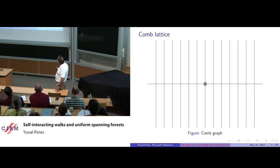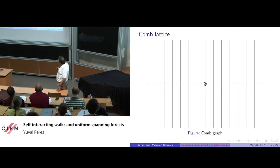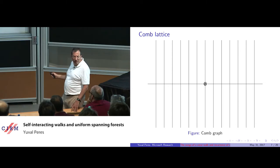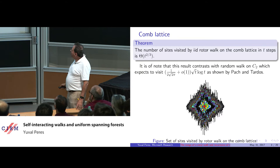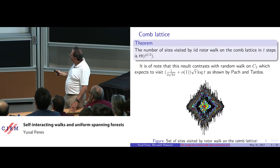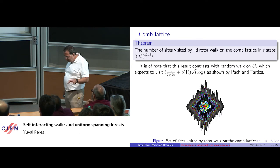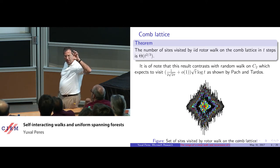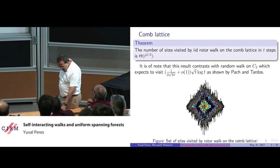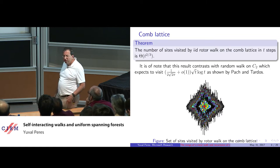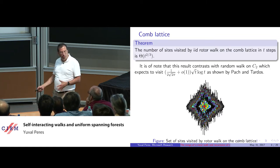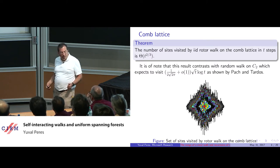One example we can analyze is the comb graph — one of my favorite graphs. This is a subgraph of Z² with one horizontal line and all the vertical lines. This is how the structure of the visited set looks in this graph. In Z² the conjecture by Priezzhev et al. is that the range of the rotor grows much slower than for random walks — t^{2/3} as opposed to t/log t.